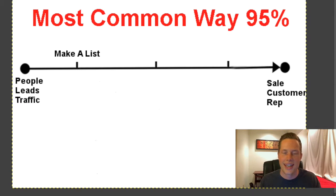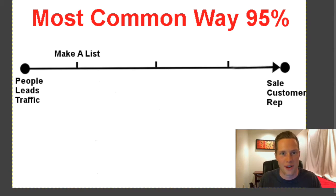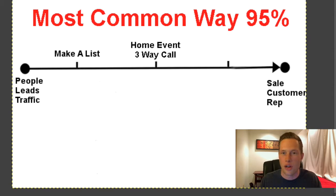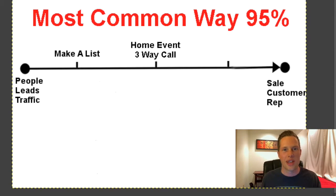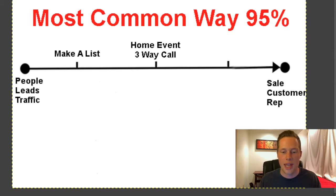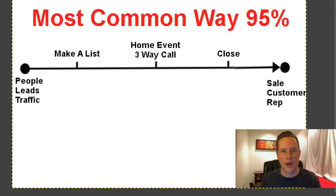The most common process is to make a list of your 100 family members and friends. Me and Paul personally wrote down a list of like 500 people that weren't interested in what we had to offer. Then what we began to do was get them on a three-way call with our upline or try to invite them to a home event — basically begging them to show up to a hotel meeting where our upline would present and we'd try to close them on the spot as a customer or rep.